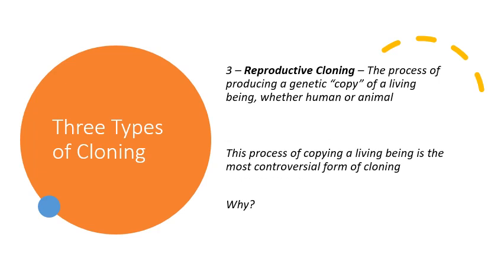The third type of cloning is reproductive cloning. This is the process of producing a genetic copy of a living being, whether human or animal. In other words, I would be what is called the clone parent, and if I wanted to clone myself, I would be producing, basically, an exact genetic replica of who I am.